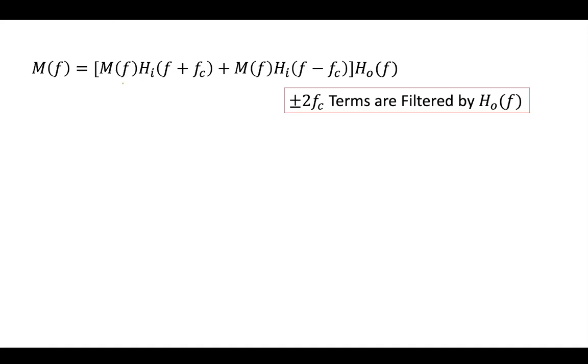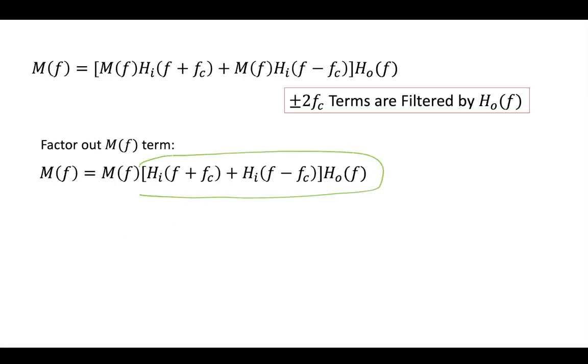And we see that we have some baseband components of our message, and we see that we have the hi filter, which has been shifted to plus and minus fc, which, as I mentioned, this is a bandpass filter, which has been now shifted by plus or minus fc down to the low-pass components. So if we factor out our original message, we can now see that we have these filters left as the other terms. So we have our message multiplied by this system of filters.